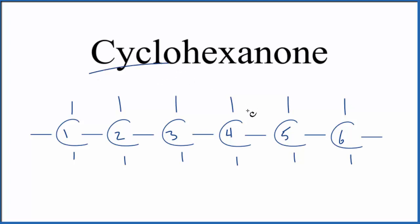The cyclo, that means they're going to be joined in a ring. So you could imagine joining this first carbon here with the last carbon. That would give us cyclohexane.